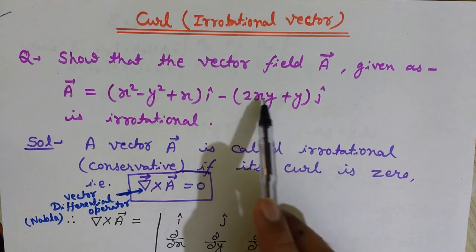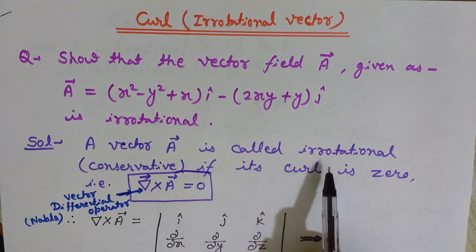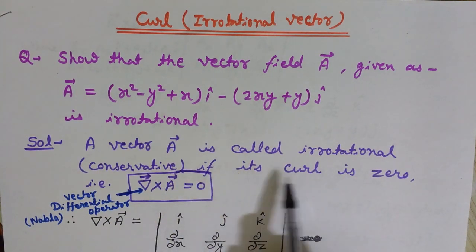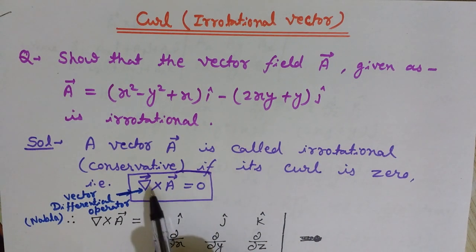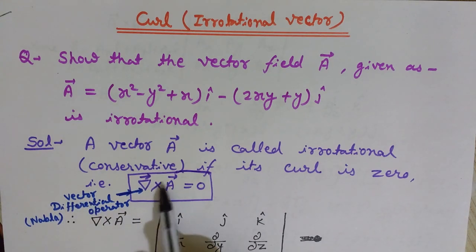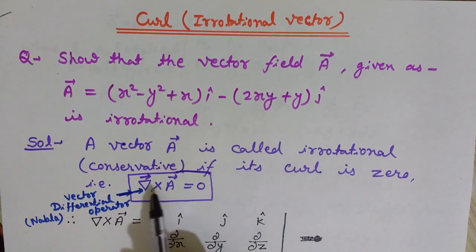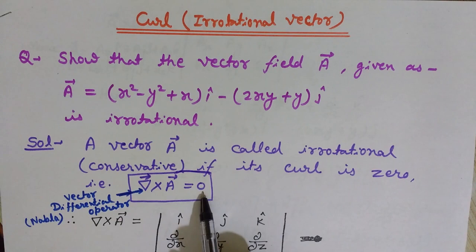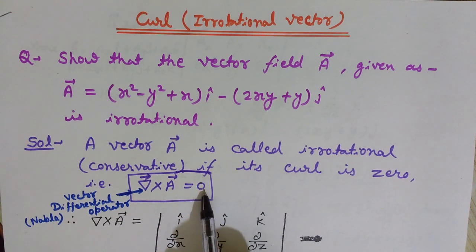A vector is called irrotational or conservative if its curl is equal to zero. The curl of a vector is denoted by the nabla operator, also known as the vector differential operator. If we take the cross product of the given vector A with this nabla operator and the result is zero, then we say that this vector is irrotational.